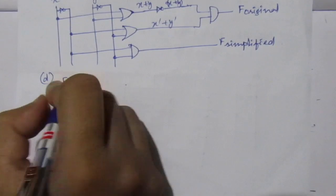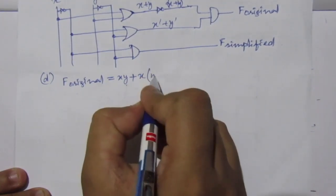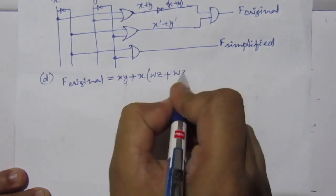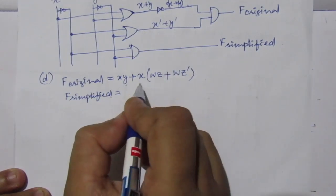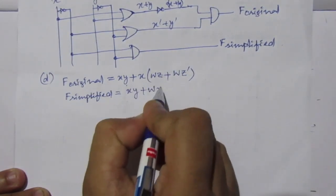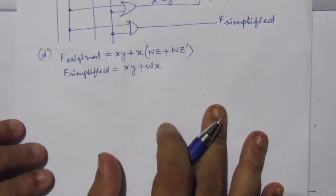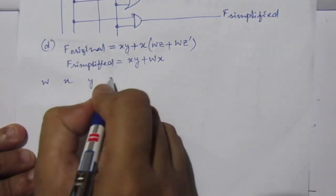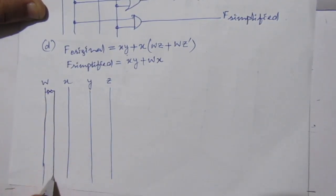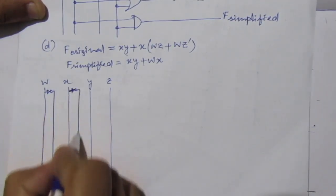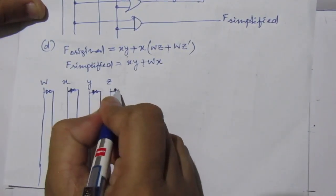For part D: F original equals XY + X(WZ + WZ̅), and F simplified equals XY + WX. We have four inputs W, X, Y and Z, so draw four lines. Use inverters to find W̅, X̅, Ȳ and Z̅.